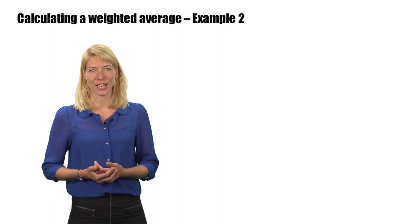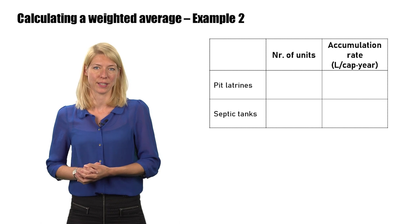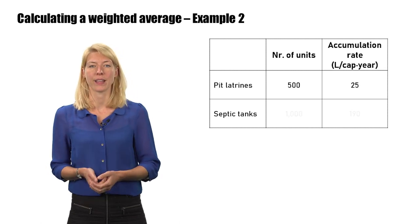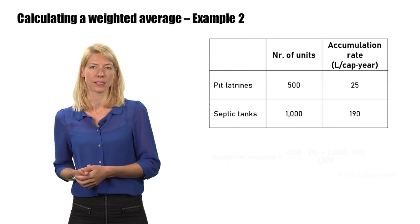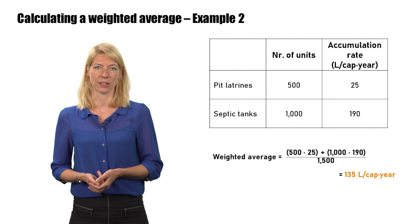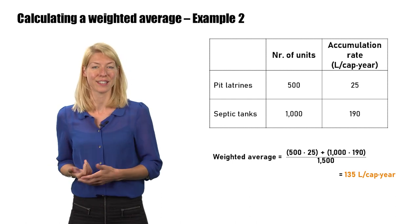In contrast, if a transfer station was being designed for a specific area within the same city, estimated to serve 500 residents with pit latrines and 1,000 with septic tanks, the weighted average would be 135 liters per capita in a year, a value 3.4 times greater than using the citywide value.